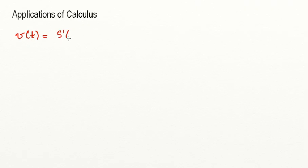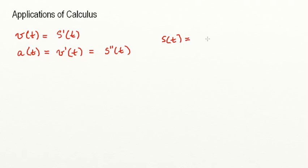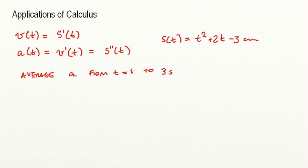Just like the instantaneous velocity was the derivative of the displacement function, we can also get our acceleration as a derivative of our velocity function, which is a second derivative of our displacement function. So again, let's carry on with the same example. My displacement function was t squared plus 2t minus 3 centimeters. So let's say that we want to find out the average acceleration from time equals 1 to 3, and also the instantaneous acceleration at time equals 1.